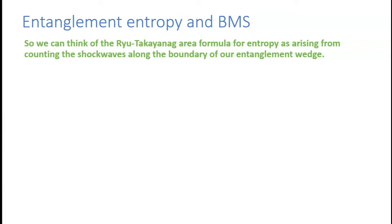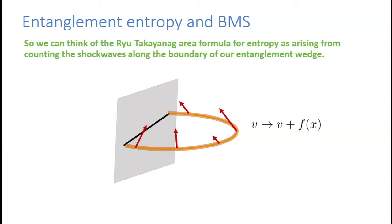Understanding the connection between the algebra of brane deformations and BMS gives a nice new way to think about counting entanglement entropy. We can think of the Ryu-Takayanagi entropy formula as arising from counting shockwaves along the boundary of the entanglement wedge — counting all possible gluing functions that join the outside and inside together with a supertranslation shift.